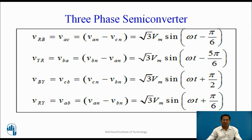Vrb = Vac = Van − Vcn = √3 Vm sin(ωt − 5π/6). Vyr = VbA = Vbn − Van = √3 Vm sin(ωt − 5π/6). Vry = Vab = Van − Vbn = √3 Vm sin(ωt + π/6).